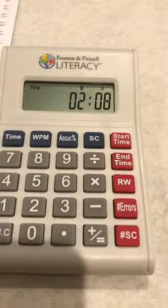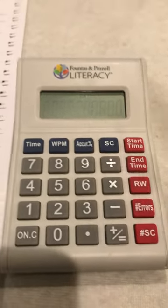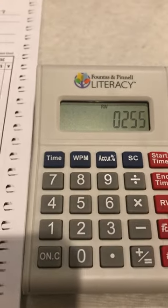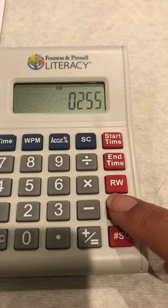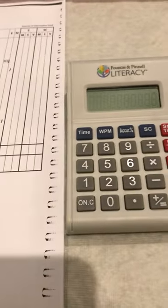Going back to the calculator, I would go ahead and put the words that she read aloud were 255 words. And then I would hit the number of errors. Remember, back on her test, she did a total of six errors.